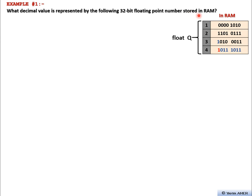The number is stored in RAM as four bytes full of binary digits. Since it has the type float, it uses IEEE 754 format. If it were an integer, it would use a different format. So we must know the type of the variable — if it's a float, we convert to decimal differently than if it's an integer.